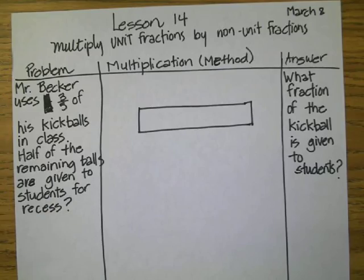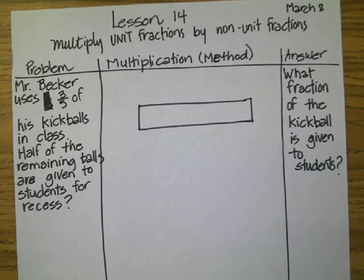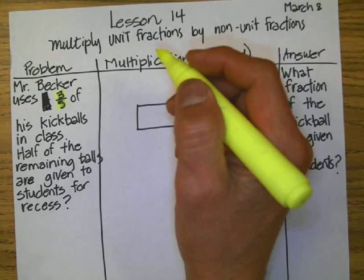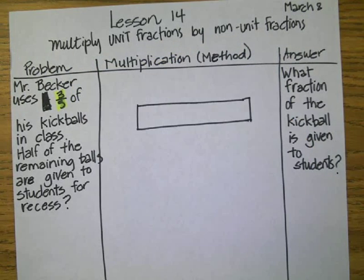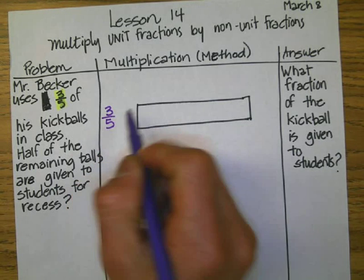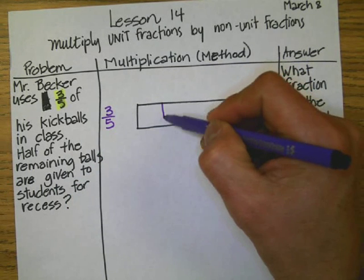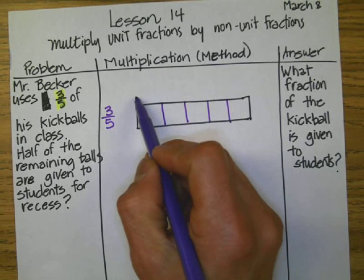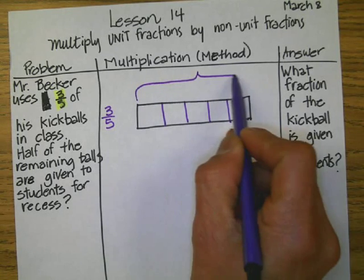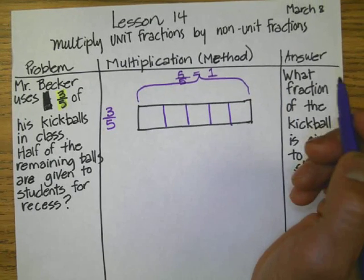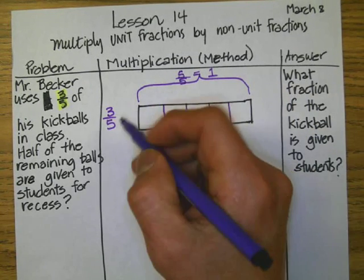Let's analyze that statement so we can clearly know what our next steps are. Mr. Becker uses three-fifths of the balls. That statement is very important because we need to know that the denominator tells us how many parts we have. So this is going to be five parts: one, two, three, four, and five. The whole problem is five over five, which equals one whole. But Mr. Becker is only using three-fifths.